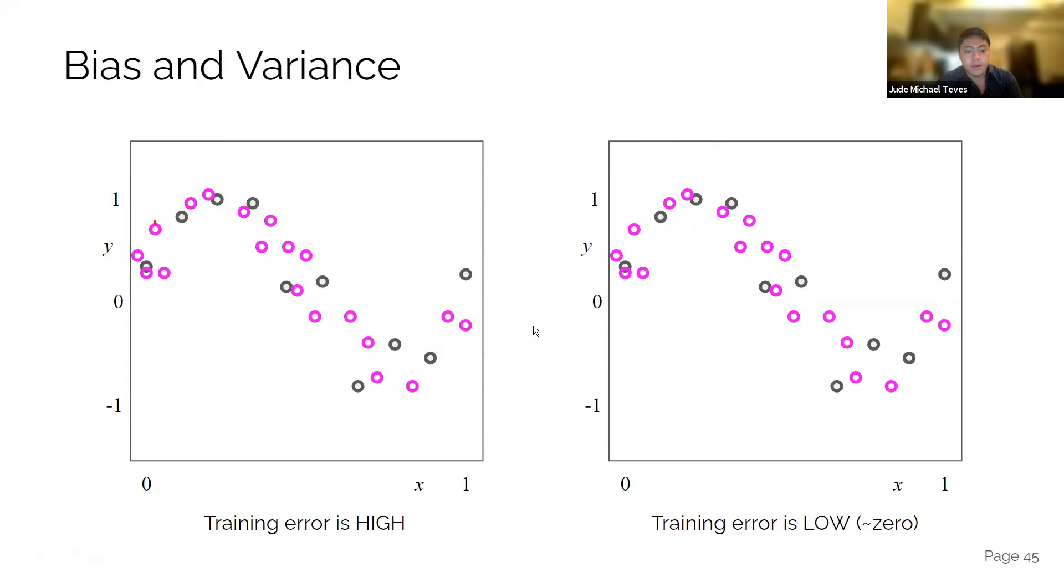How about this one? Now we have our test set. So that's just for training data. So use the same model. It's just a linear model. And then we check the testing error is still high. The pink data points are the test. The gray are the train data points.